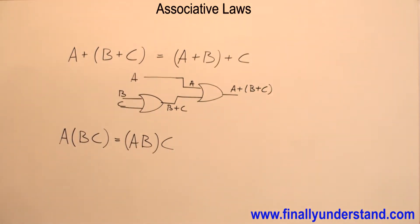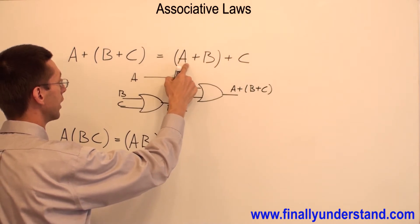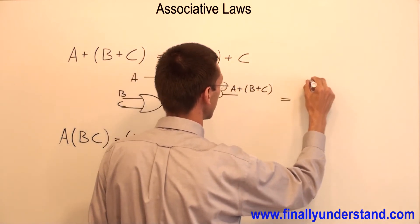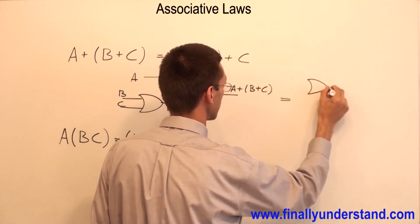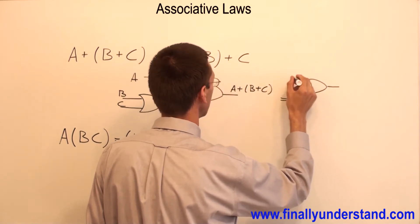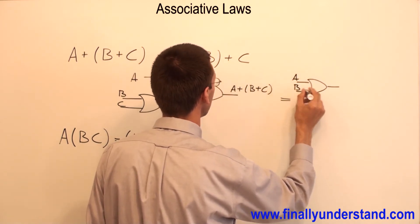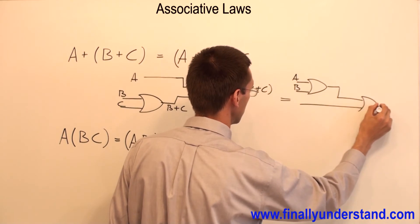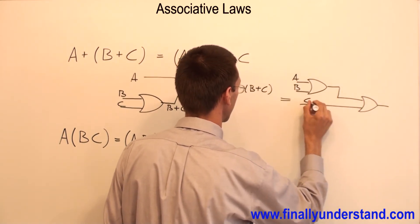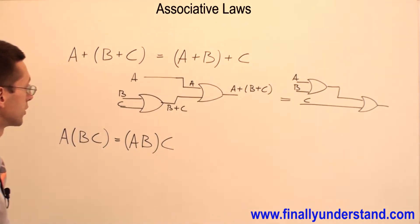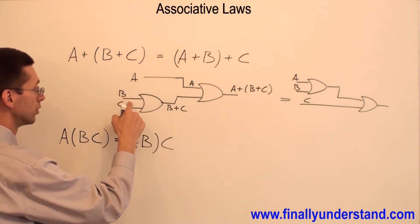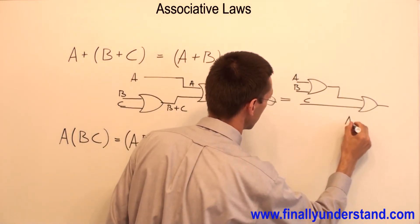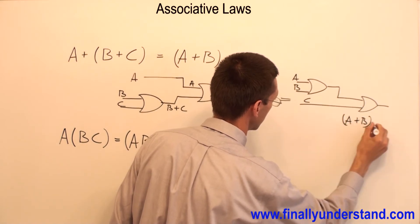This law states that this is going to be equivalent to A OR B OR C. Let's take a look. I have A OR B, and everything is ORed to C. These two circuits are equivalent. This is nothing else, just three input OR gate. And this is also three input OR gate. Because the answer is A OR B OR C.